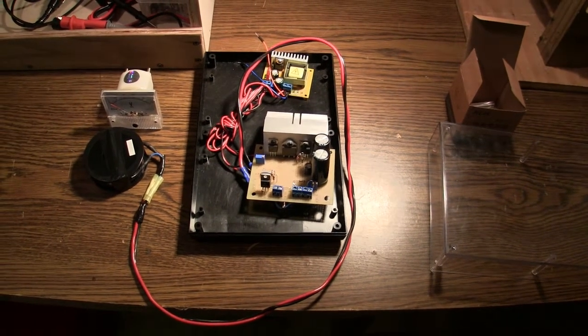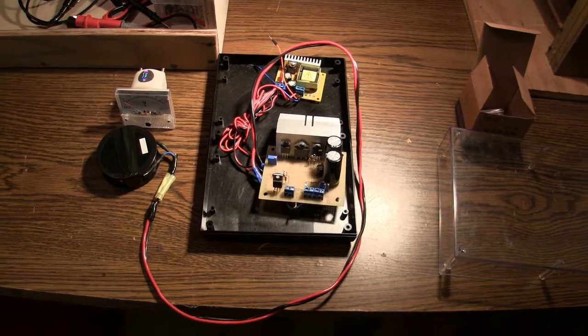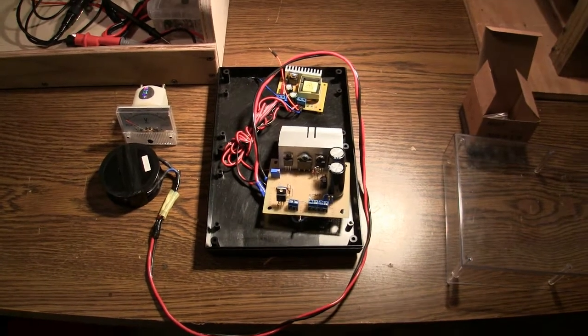Hi, this is part two of the Bob Beck Magnetic Pulsar, and right now, I've got the circuit running. Everything works fine, but it's very crude looking.